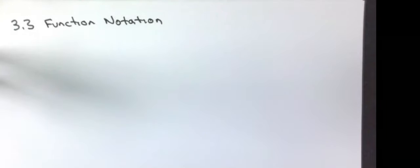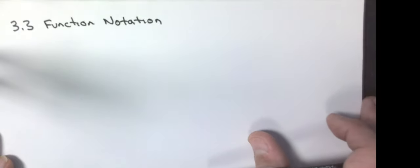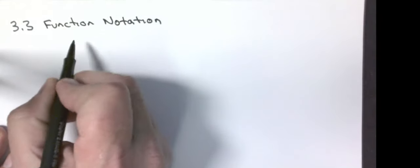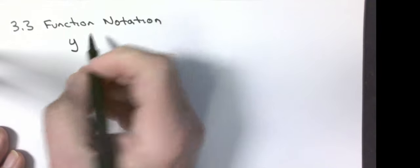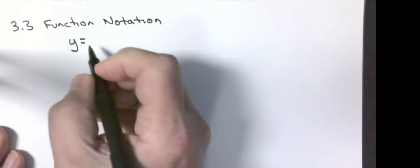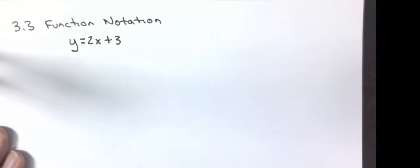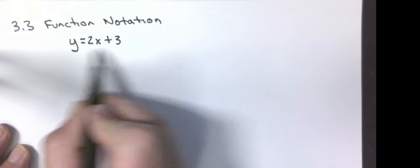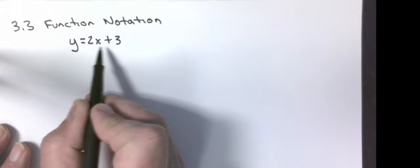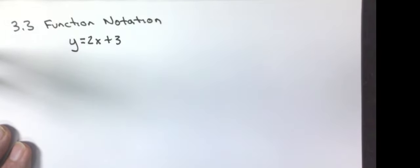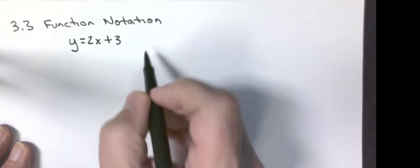In this section, we're going to talk about what is called function notation. What we have been dealing with in the past are equations that are possibly functions or not functions. So this equation, y equals 2x plus 3, is a linear function. We know that from our prior lessons in this chapter. But we have this written as an equation.